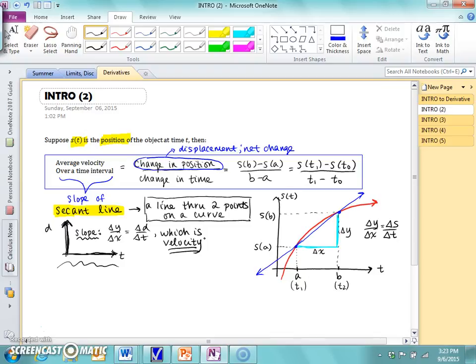And we know change in distance over change in time is velocity. So therefore, the slope on this coordinate plane is the same as the average velocity.